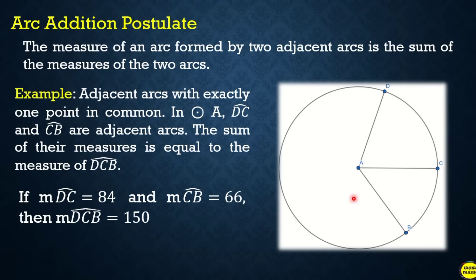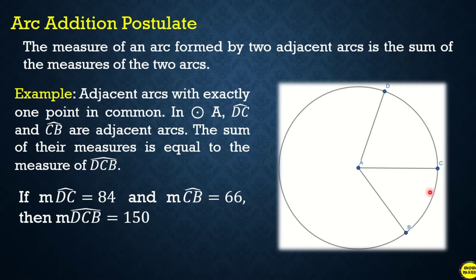For example, if the measure of arc DC is 84 and the measure of arc CB is 66, then the measure of arc DCB is equal to 84 plus 66, which is 150.